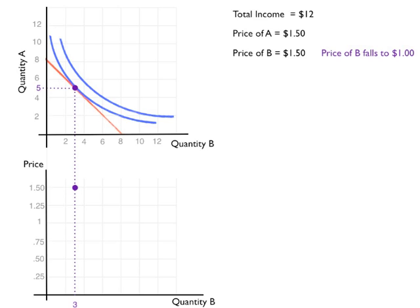If the price of B falls to $1, we see the budget curve rotate out like that, and the consumer now consumes at a new point. At this point, they'll consume 4 units of A and 6 units of B.